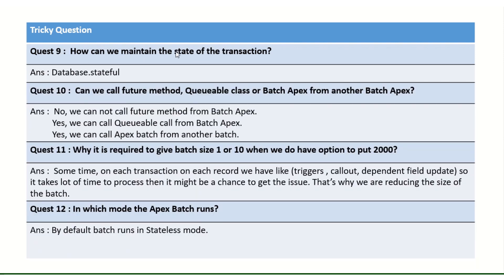How can we maintain the state of a transaction across batch executions? If you want to maintain any variable value across execute method calls, you must implement database.Stateful. Without it, variables reset between each execute call because the batch runs in stateless mode by default.